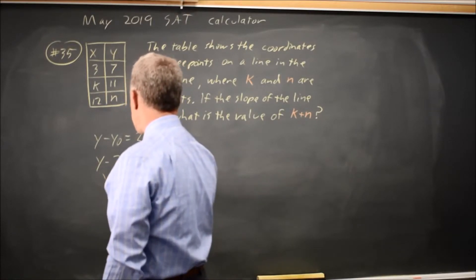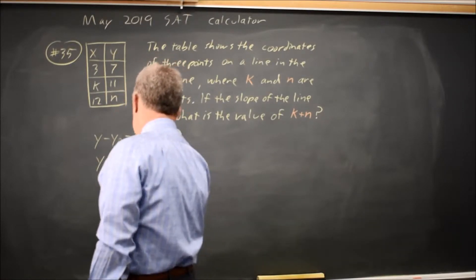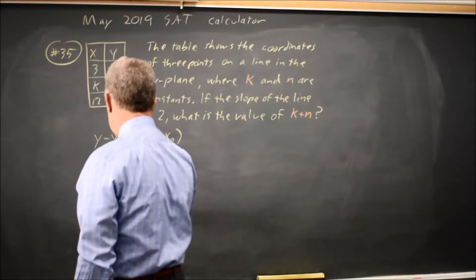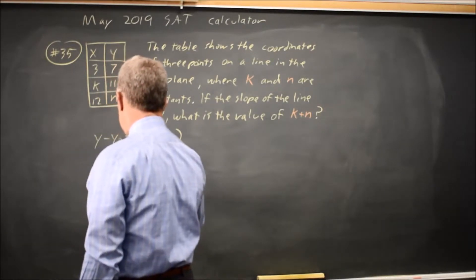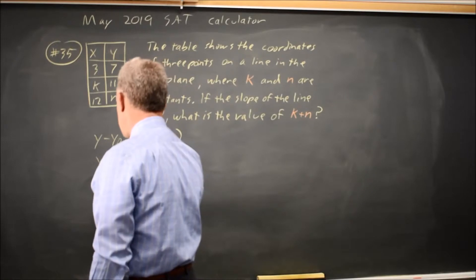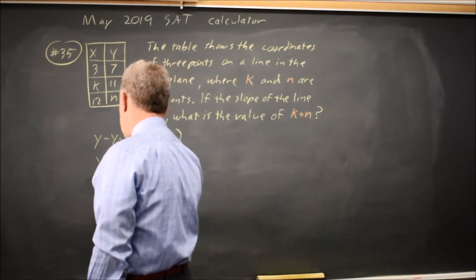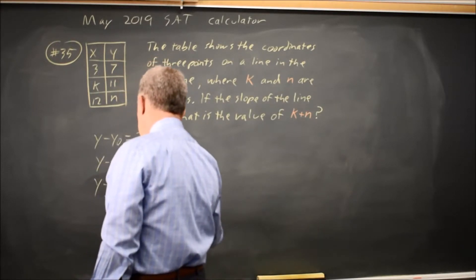y minus 7 equals twice x minus 3. So y equals 2x, one step at a time. y minus 7 equals 2x minus 6. Add 7 to both sides. y equals 2x plus 1.